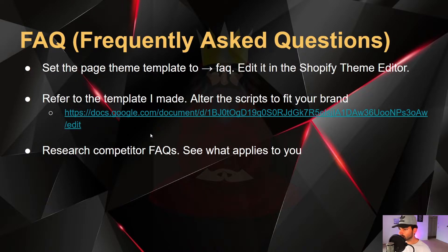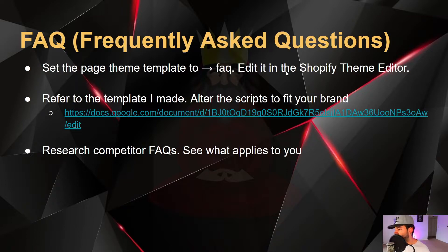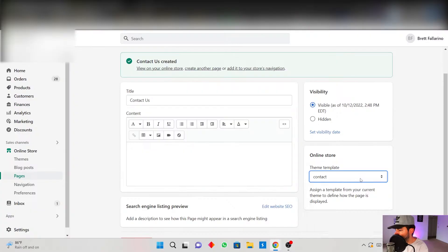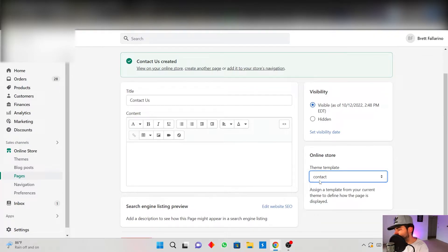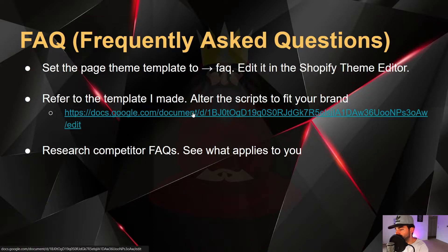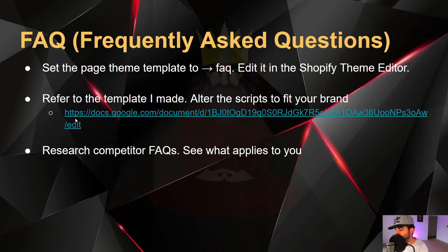For the Frequently Asked Questions page, you're going to want to set the page theme template to FAQ and edit it in the Shopify theme editor. In the theme template, if it says FAQ, you switch it there and you will have a template set up for frequently asked questions.